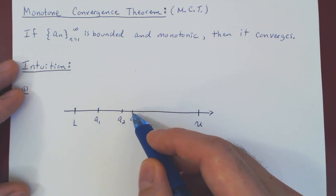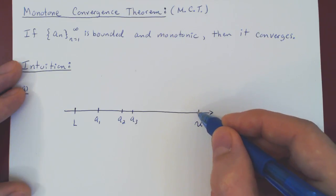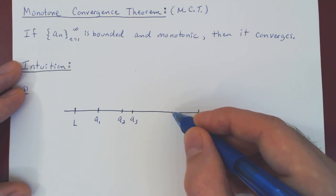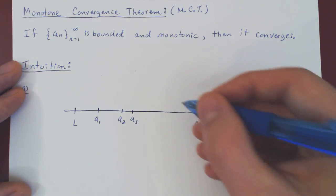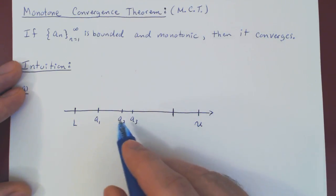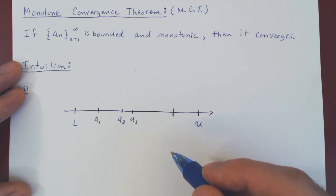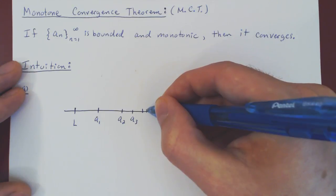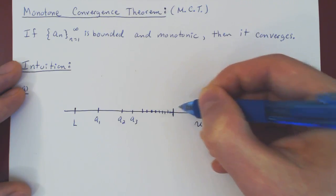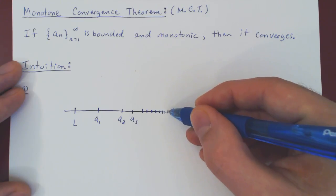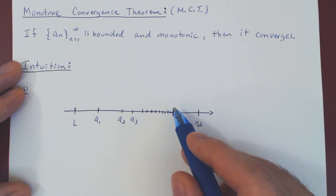As we keep increasing, at some point we're going to have to hit a wall, because we can't go beyond u. So the wall could be u, or it could come beforehand. In most cases, the wall will come before u. We cannot keep increasing forever and out of bounds, so at some point we'll have to hit a wall. So you have a4, a5, a6, a7, a8, a9, a10, a11, a12 — and we never go beyond this wall, but we keep getting a little larger and therefore a little closer to it. So this will be our limit, and the sequence will converge to this point.